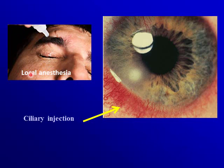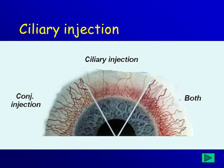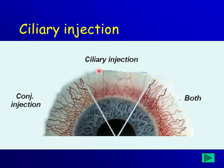To examine the patient you need to apply local anesthesia so you can open the eye. Then you will see redness around the limbus — this is ciliary injection. In this slide, conjunctival injection shows individual vessels that are dark red, while ciliary injection appears as a hue of pinkish discoloration where we don't see individual vessels. In some sectors both ciliary and conjunctival injection are present.